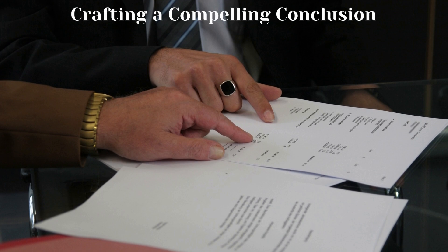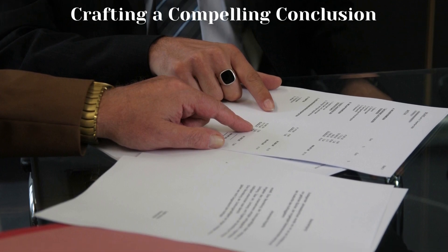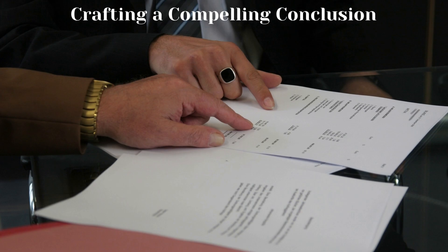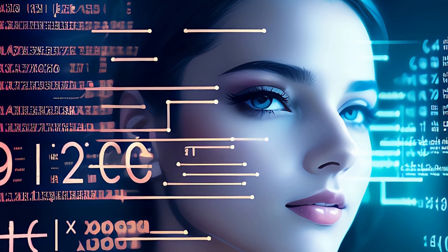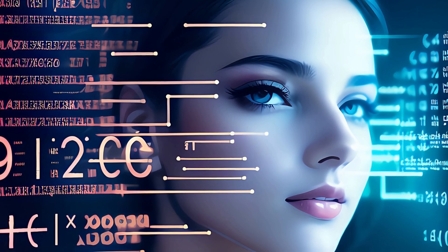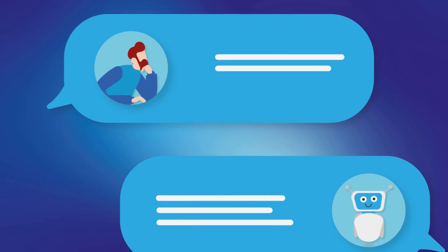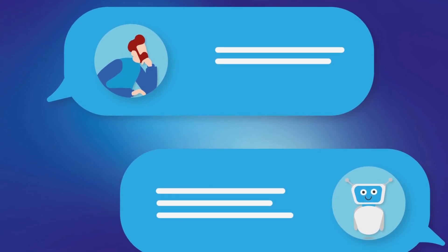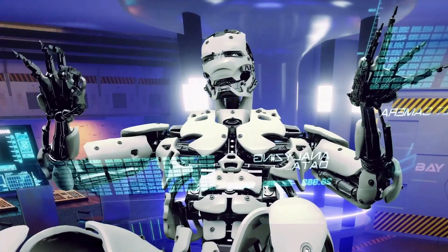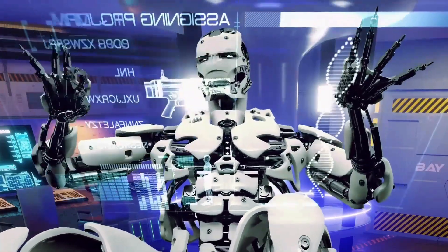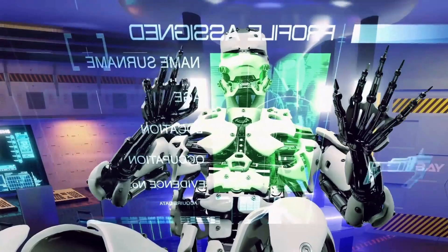Crafting a compelling conclusion. Finally, you can use ChatGPT to write your conclusion. Use the following prompt: 'Summarize the main points of this research and emphasize on addressing the issue of domestic violence among black women.' If you need remarkable results from your prompts, I suggest you use the paid version of ChatGPT. ChatGPT 3, which is the free version, is not capable of memorizing earlier inputs and chat discussion. But the paid version ChatGPT 4 can do it for you easily. So try to upgrade your ChatGPT account before you embark on a journey to write your research paper.